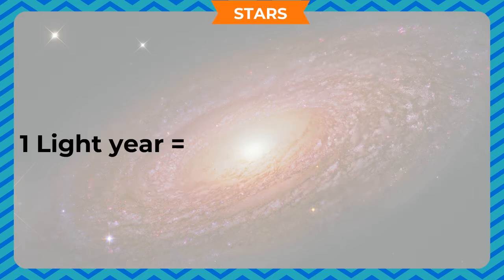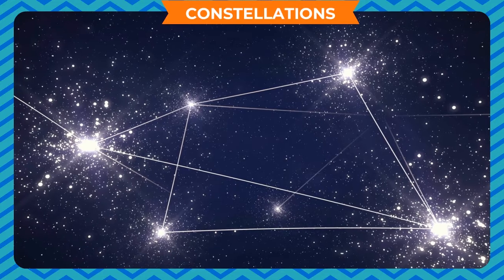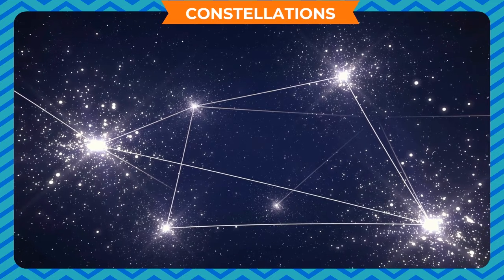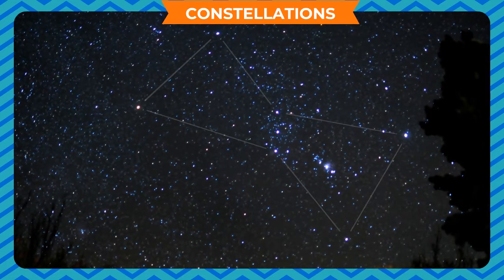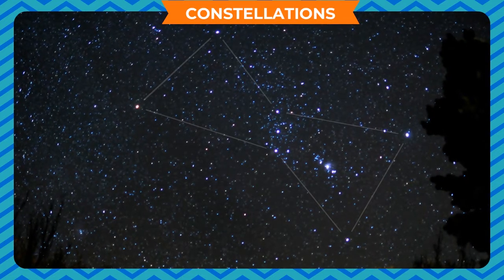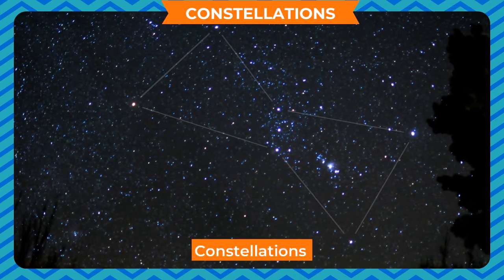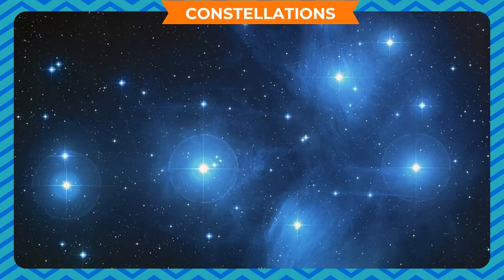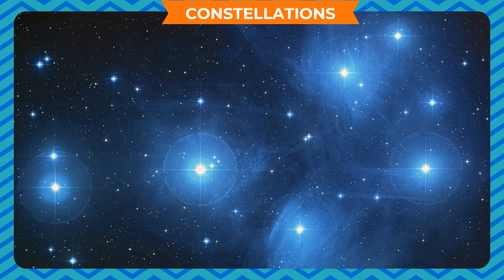Thus, one light year is equal to the distance of 9,460 billion kilometres. Constellations: Many stars appear to be arranged in a pattern which resembles a certain object or figure. Such recognisable patterns are called constellations. So far, we are aware of 88 constellations.